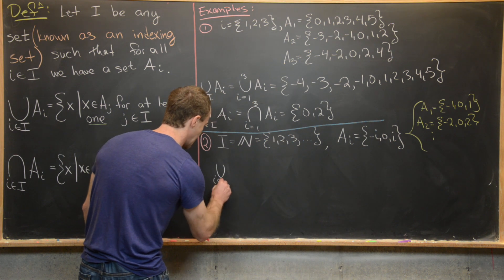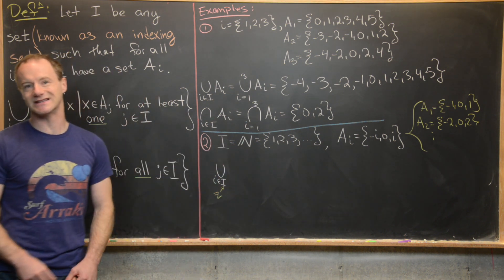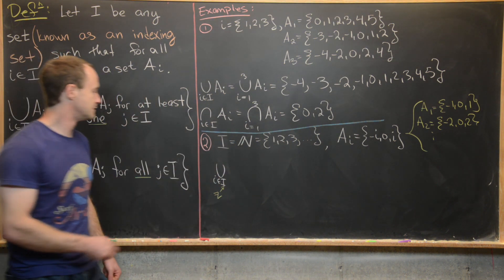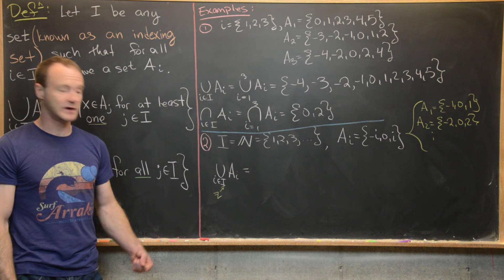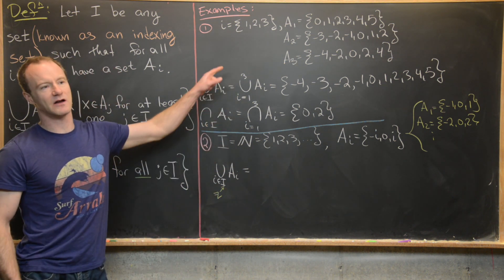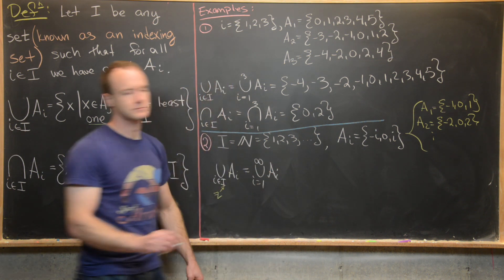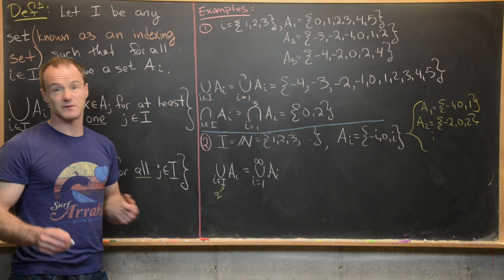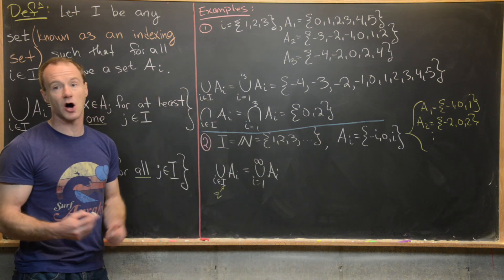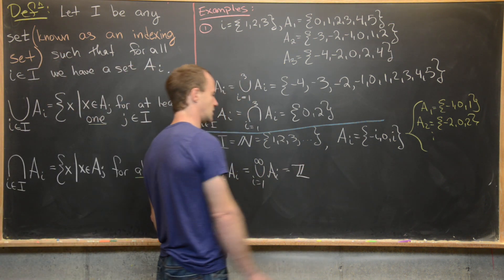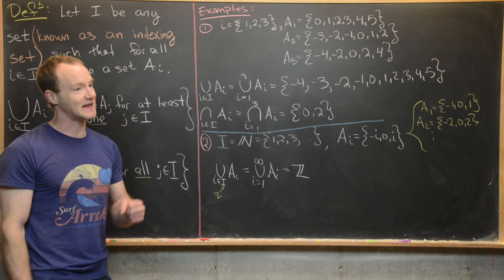Let's do the union and intersection just like before. The union over all i in I — which we can replace with i in the natural numbers — of A_i. When indexing over the natural numbers, we write this as the union as i goes from 1 to infinity of A_i. Notice that if we union over all of these sets, we produce all of the integers. Technically you'd want to prove this with double containment, but that's further along in this course.